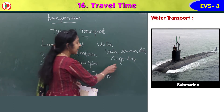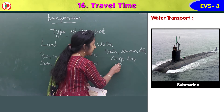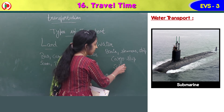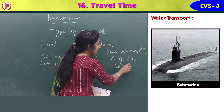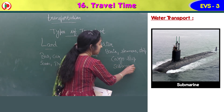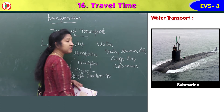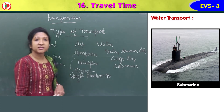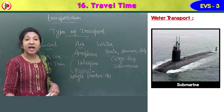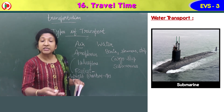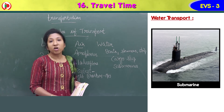Submarines are ships that can travel underwater. We say submarines are ships that travel under the water.